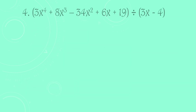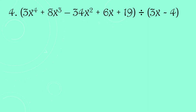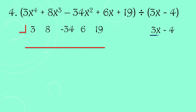Let's have number 4: quantity 3x⁴ + 8x³ − 34x² + 6x + 19 divided by (3x − 4). The powers are complete, so the coefficients are: 3, 8, negative 34, 6, and 19. Since the leading coefficient of the divisor is 3, we divide both terms by 3, giving x − 4/3. The opposite sign of −4/3 is positive 4/3 — that is our synthetic divisor.